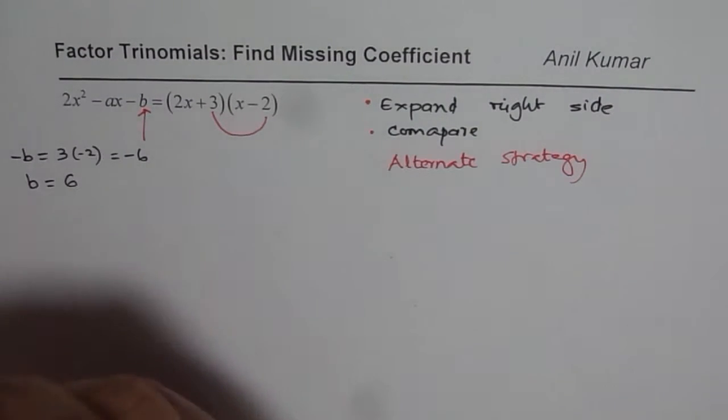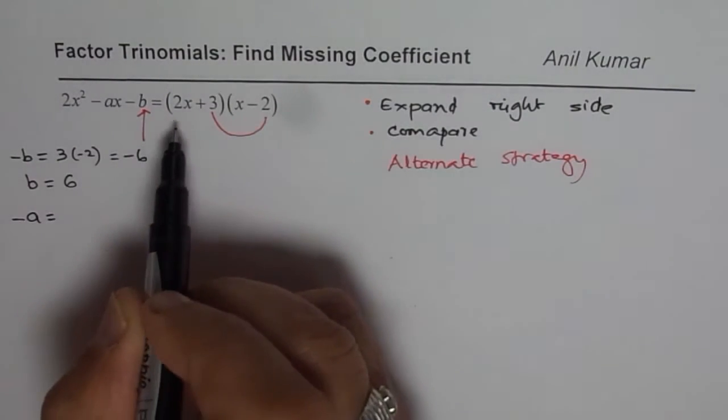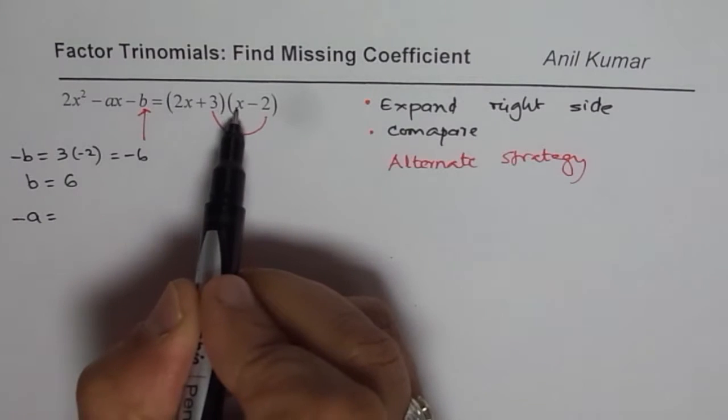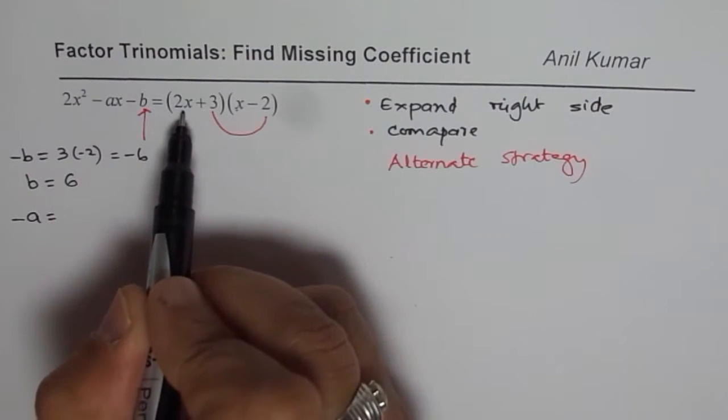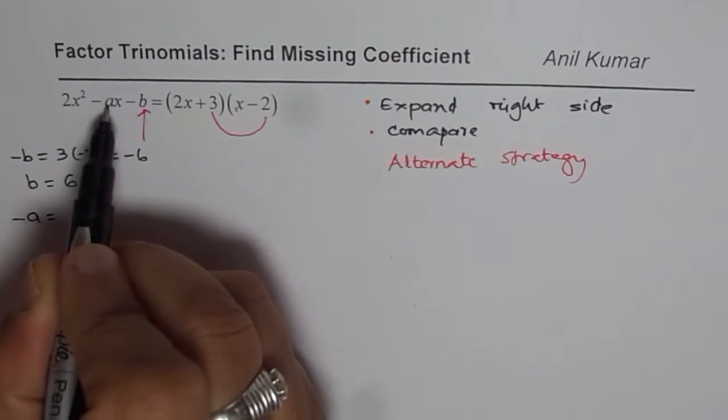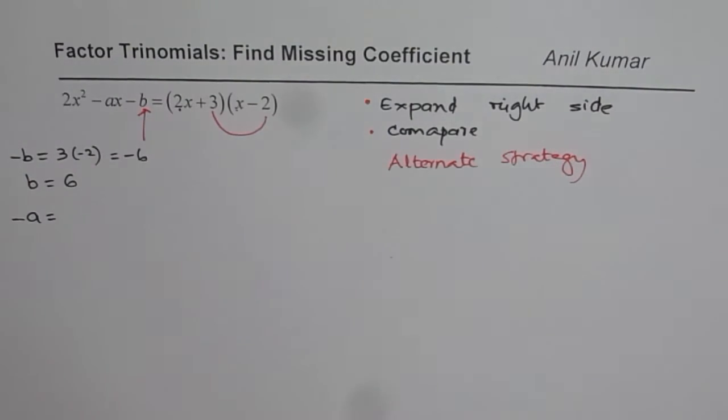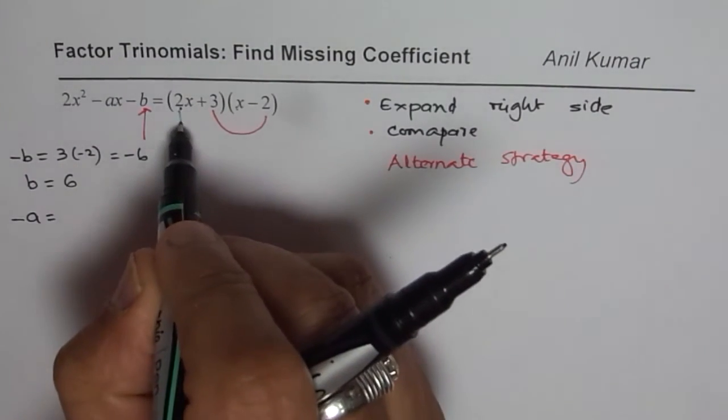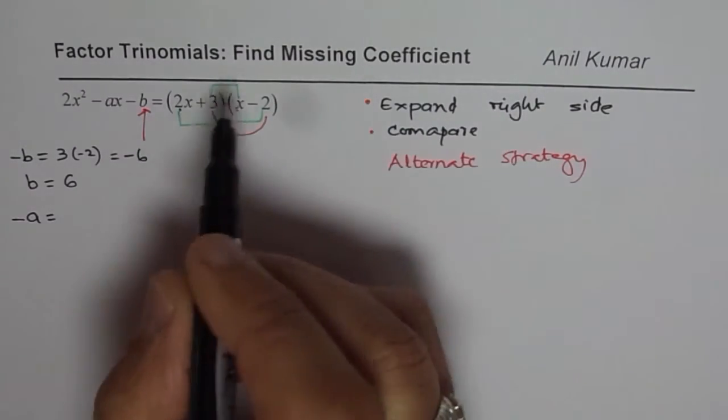As far as a is concerned, the center term: -a equals the product of these two, the outer and inner terms. So 2x and -2. We'll not write x because we're just taking the coefficient of x. So 2 times... let me write this down. We'll do 2 × (-2) and 3 times, for the outside and inside terms.